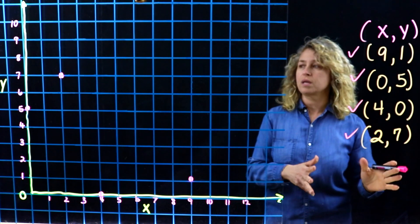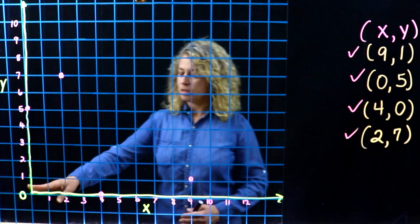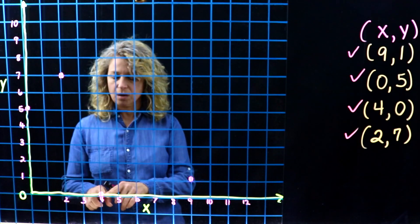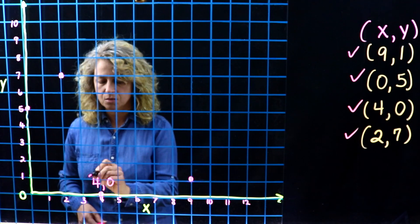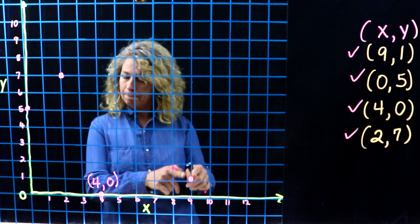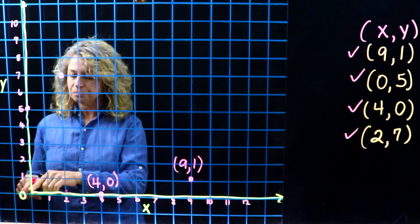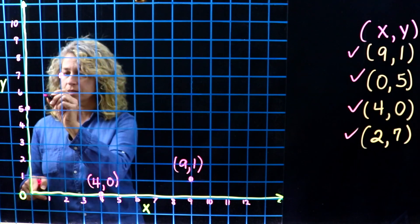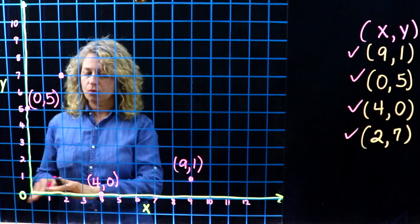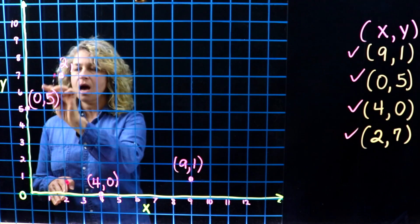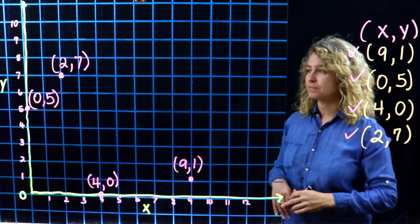Let's go back and label the points. This first point is on the zero line, so it's labeled four comma zero. This next point is nine comma one. Then we have zero comma five — that's a little tricky when you have zeros. And the last point is over two and up seven, so two comma seven. There are your points and the coordinates that correspond.